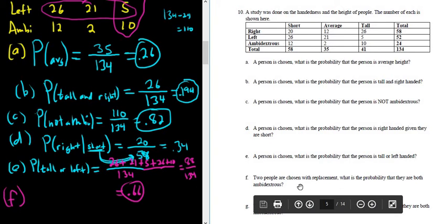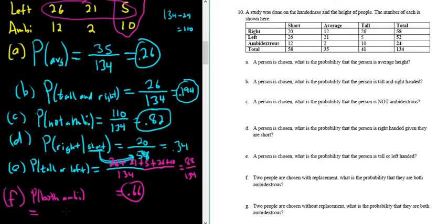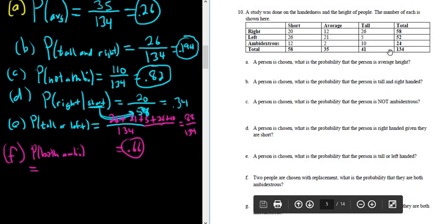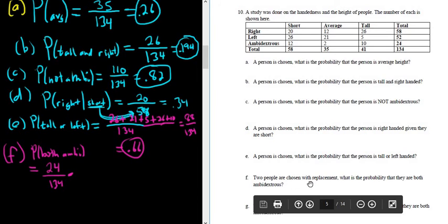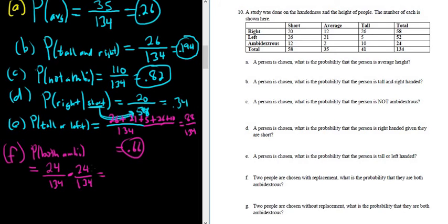Part F. Two people are chosen with replacement — what is the probability that they're both ambidextrous? We want both to be ambidextrous, so we use the multiplication rule. There are 24 ambidextrous people and 134 ways to pick a person. Because it's with replacement, we put the person back, so we still have 24 and 134. That gives us (24/134) squared, which is 0.03.